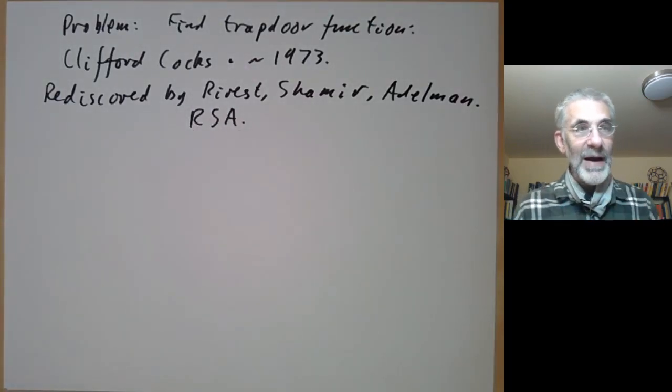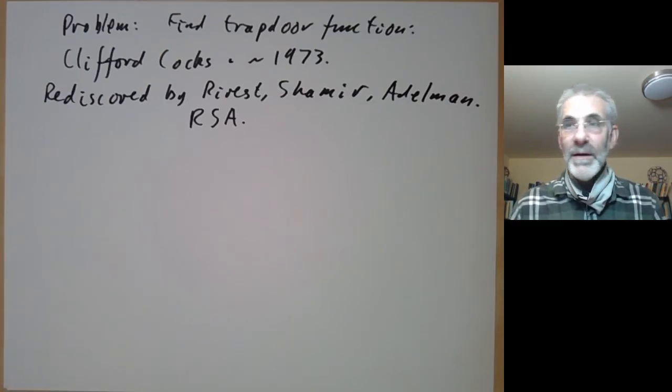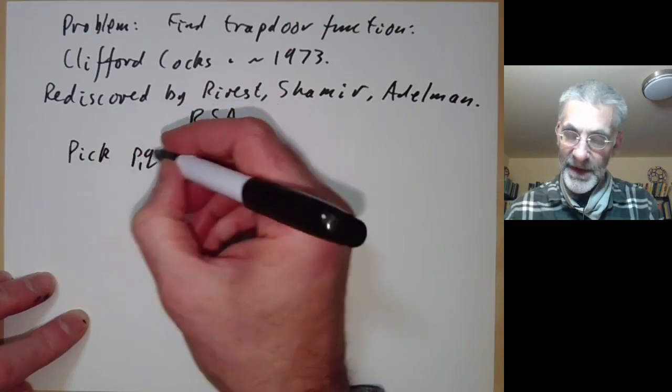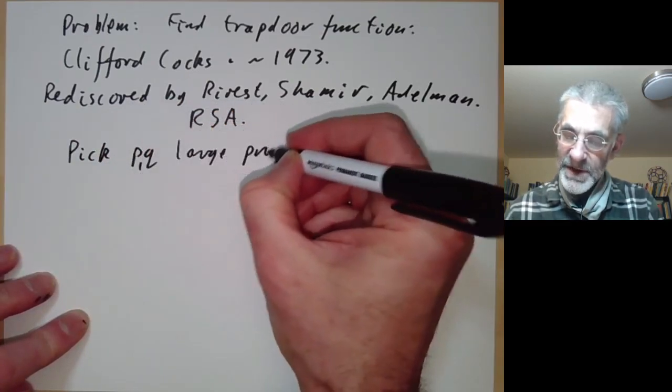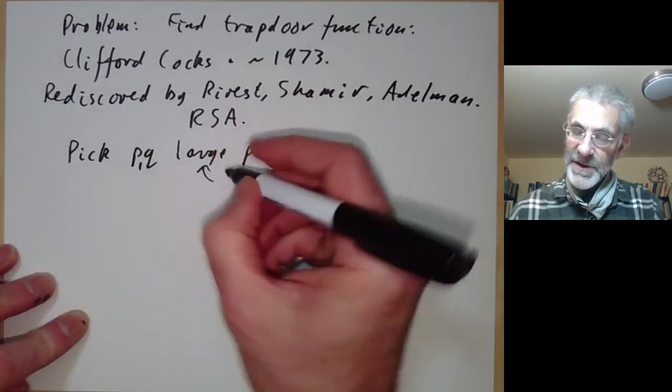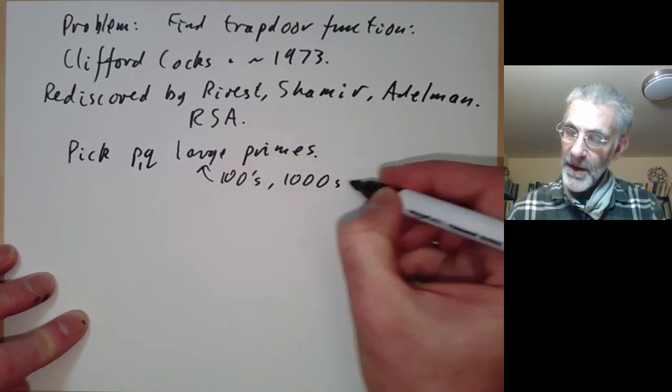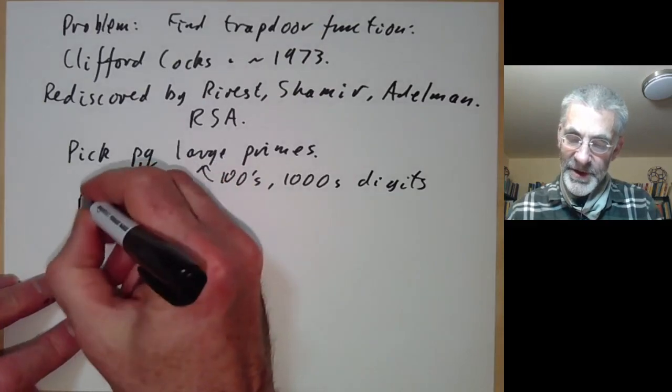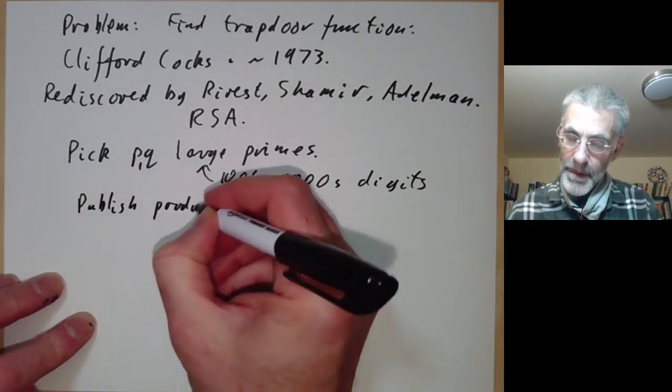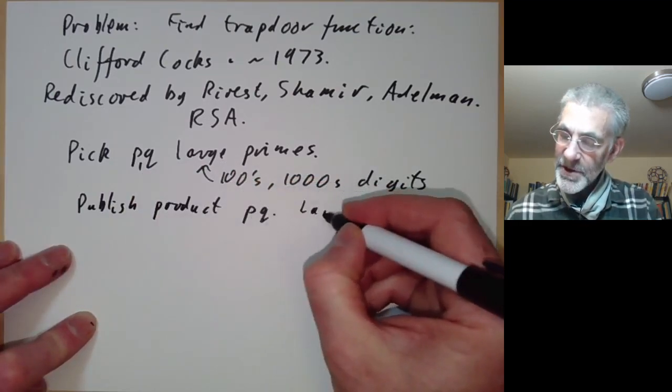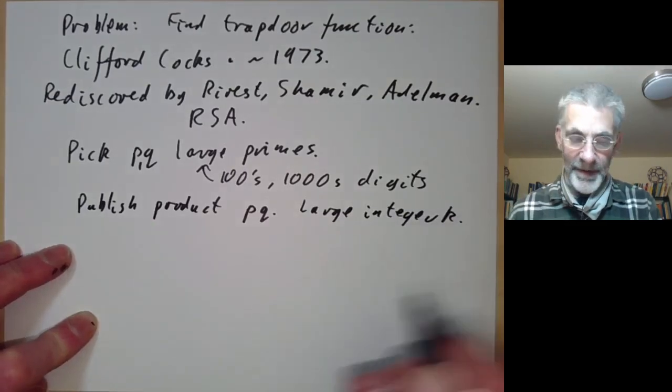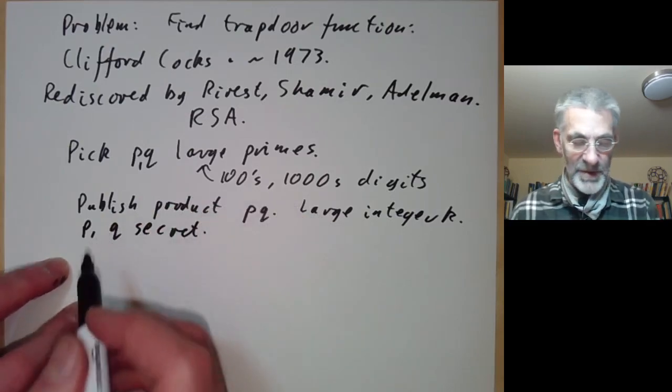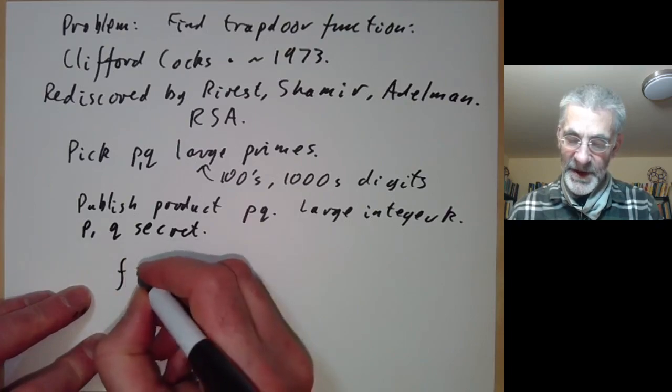It's usually known by their initials, RSA, and it works as follows: we pick p and q as two large primes. Large means hundreds or maybe thousands of digits, depending on how secure you want to be and how paranoid you are. Now what you do is you publish the product p times q, and you publish a large integer k. However, you're careful not to publish p and q—p and q are kept secret. You only publish the product.